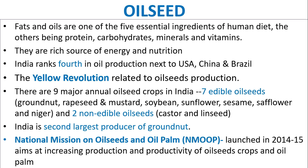The Yellow Revolution is related to oil seeds production. There are nine major annual oil seed crops in India. Seven edible oil seeds: groundnut, rapeseed and mustard, soya bean, sunflower, sesame, safflower and niger.